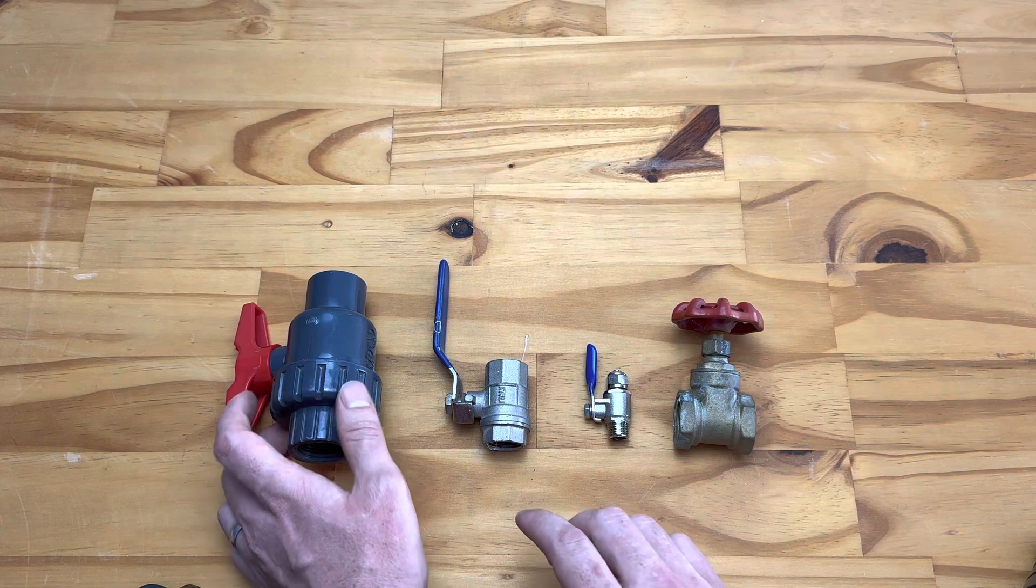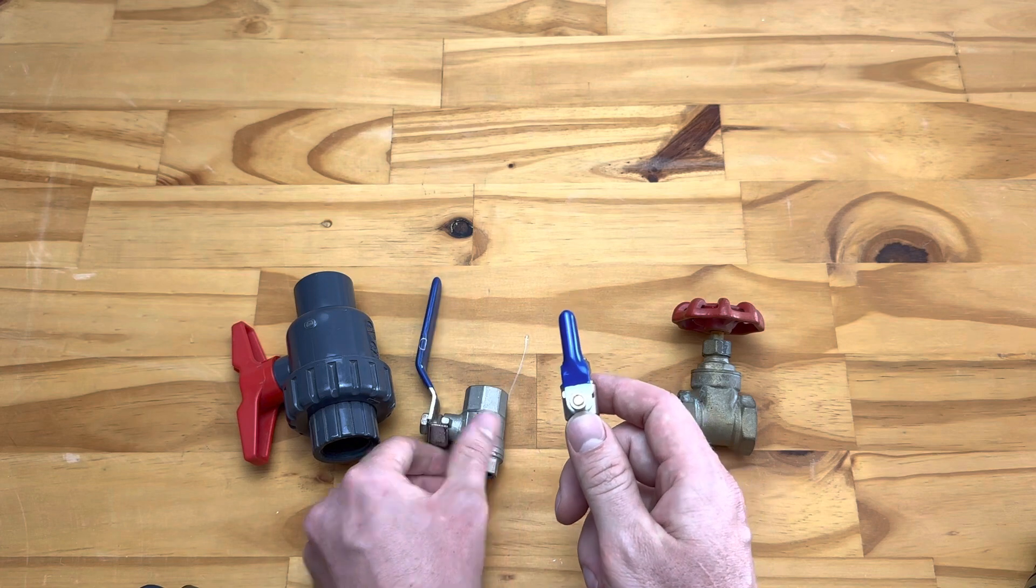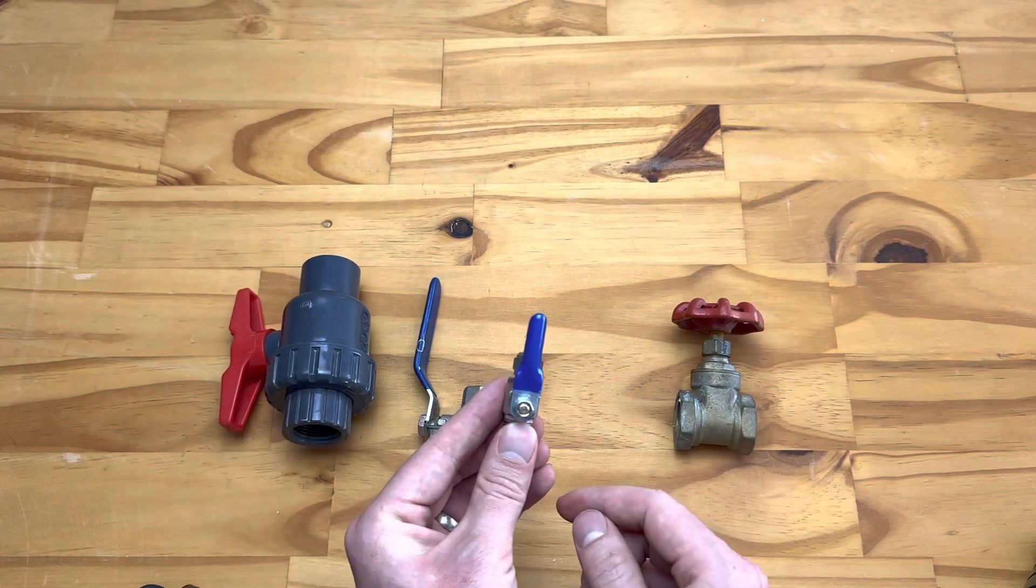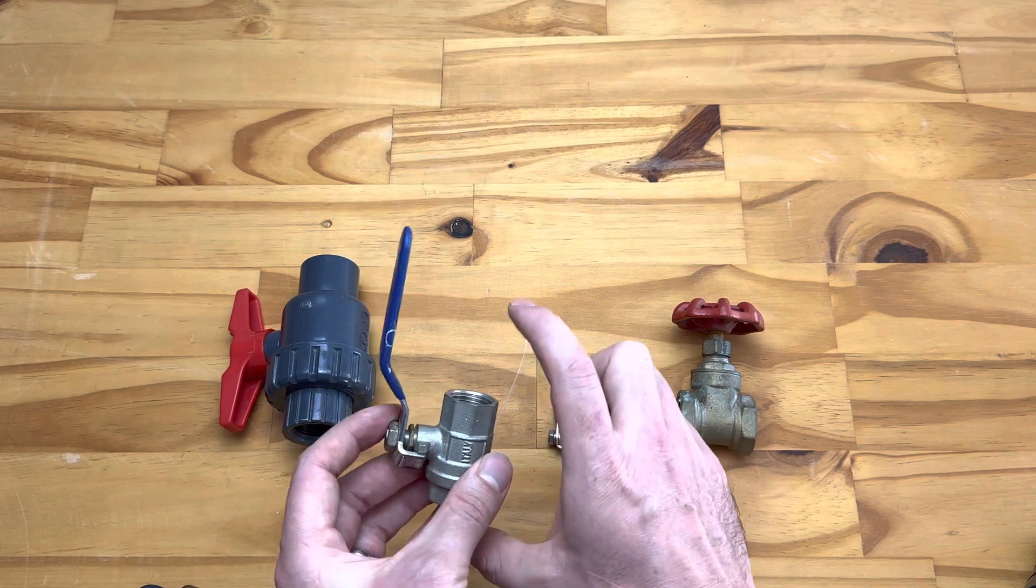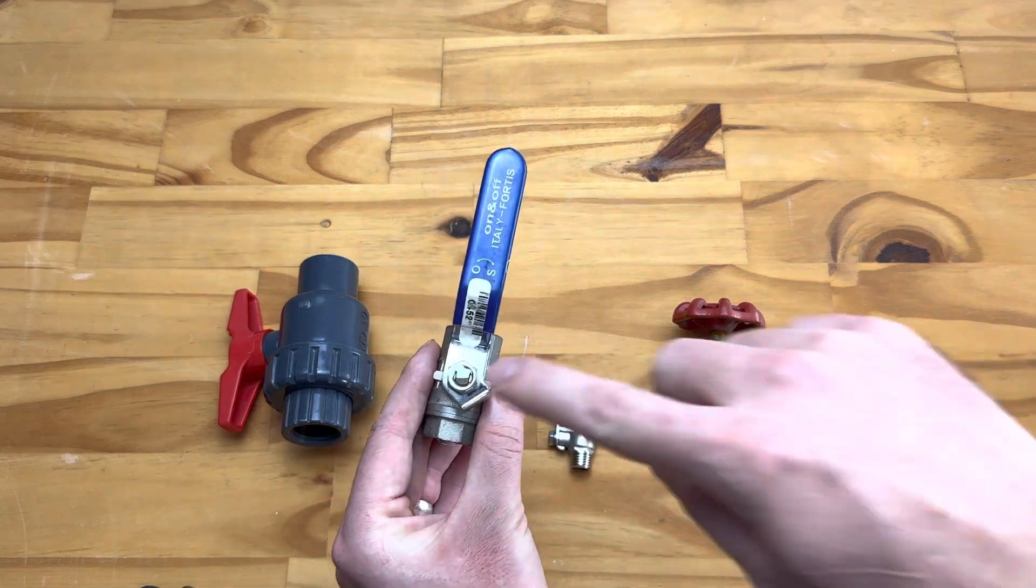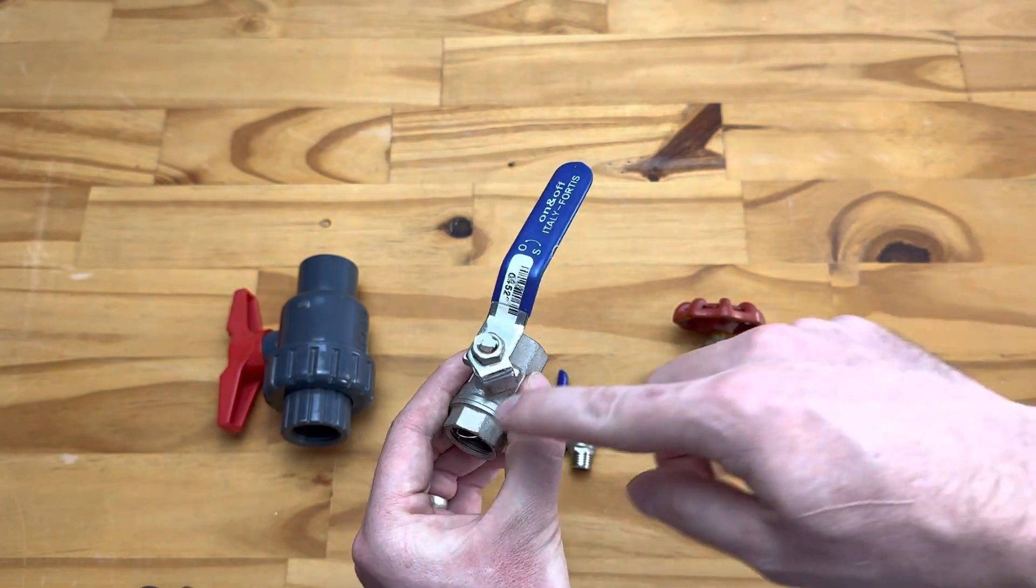So generally as a rule of thumb, if you have any sort of valve with a handle on like this, you'll find that when the handle is showing in the direction of your pipe - because obviously either end will be a pipe - when it's showing in the direction of the pipe, then your valve is open so the water will flow through.